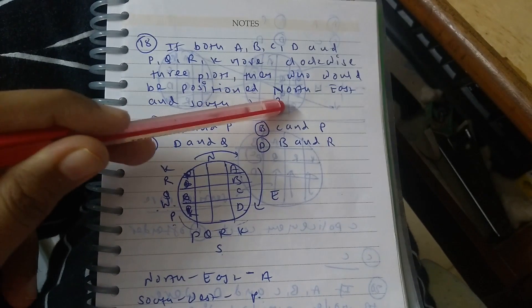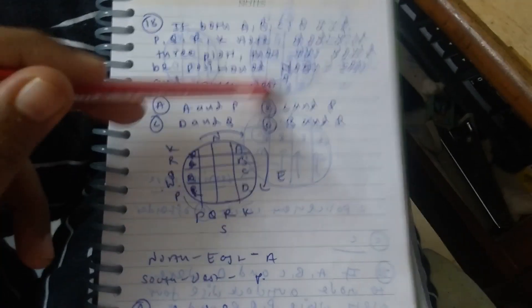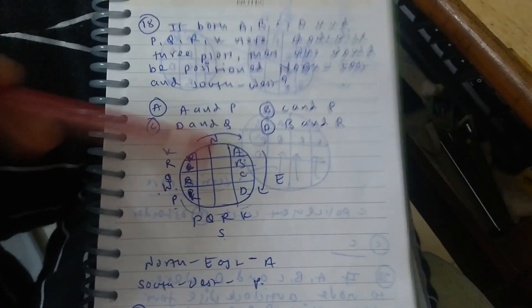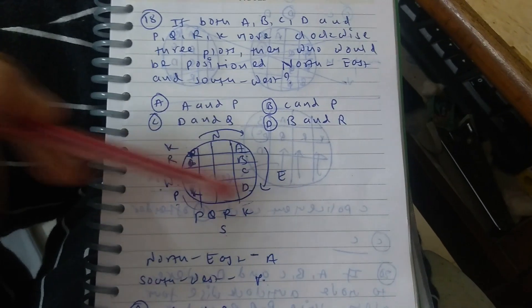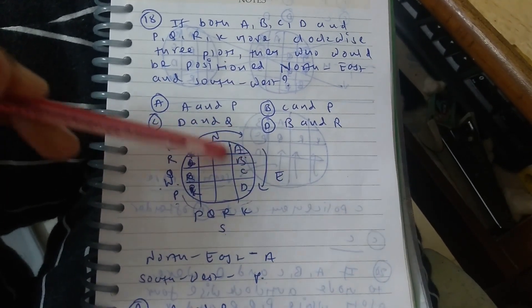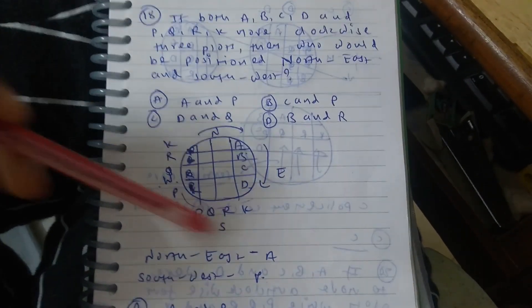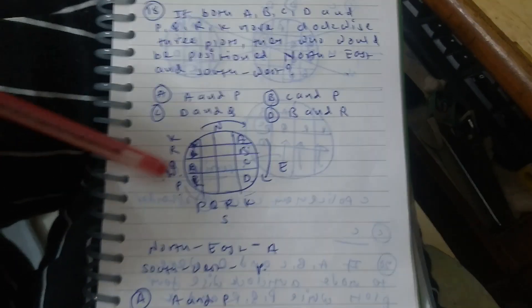So who will be in the north-east and south-west region? In the north-east region, A is present, and in the south-west region, P is situated.